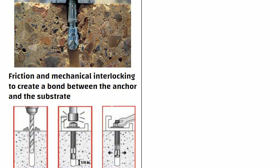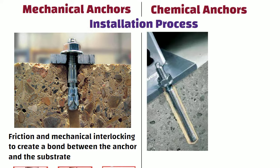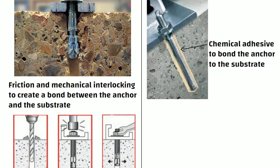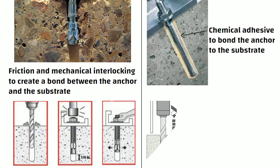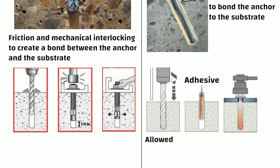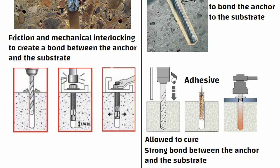On the other hand, chemical anchors use a chemical adhesive to bond the anchor to the substrate. They are installed by first drilling a hole into the substrate and then inserting the anchor along with chemical adhesive. The adhesive is then allowed to cure, creating a strong bond between the anchor and the substrate.